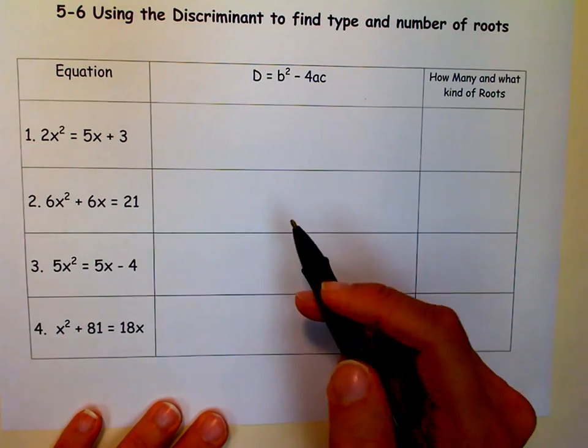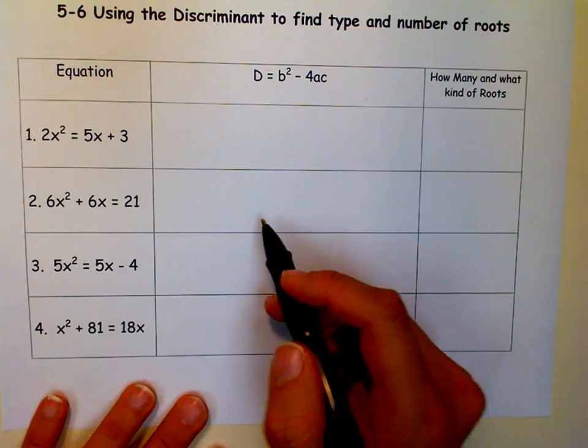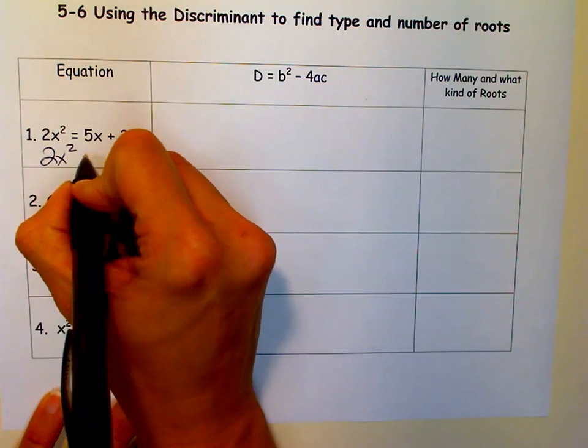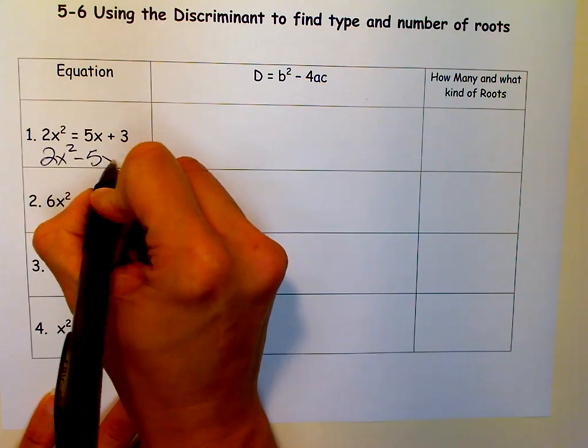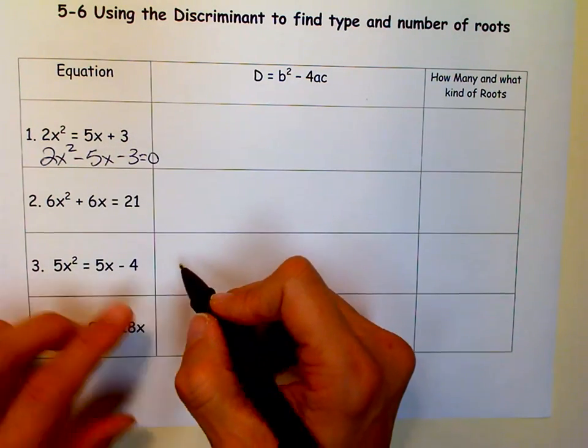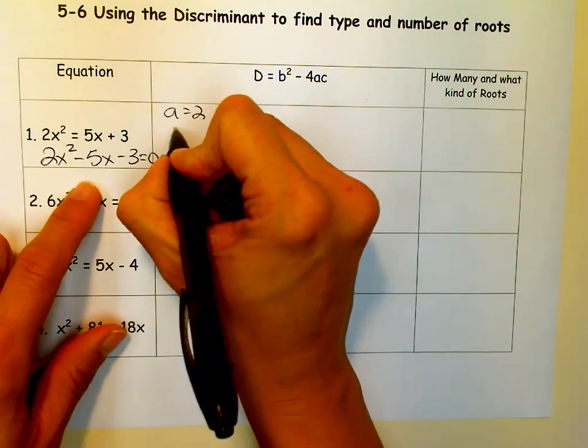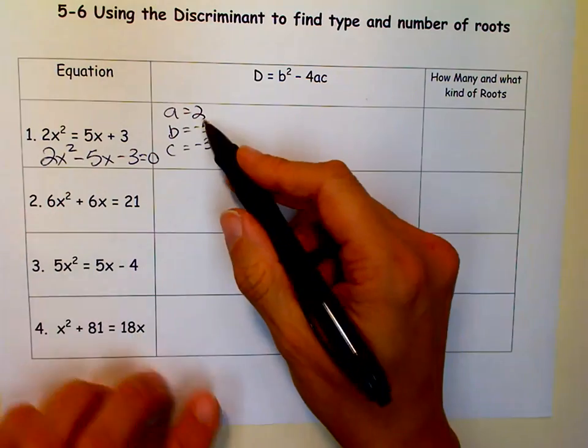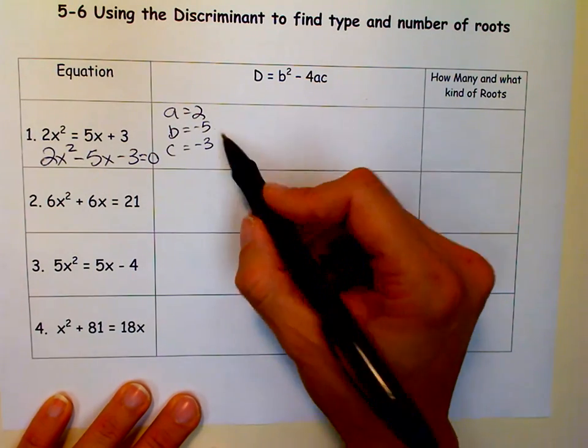Okay, so in order to find the discriminant, we first need to make sure things are in the correct form. We need everything on one side. So if there's some on the left side, some terms on the right side, we want to move everything over so that we get a zero on one of the sides. And now I know that a is 2, b is negative 5, and c is negative 3.